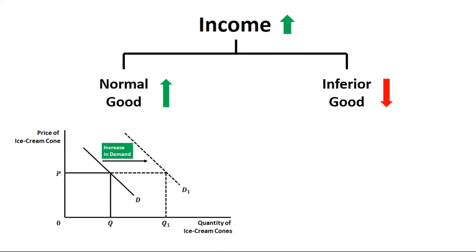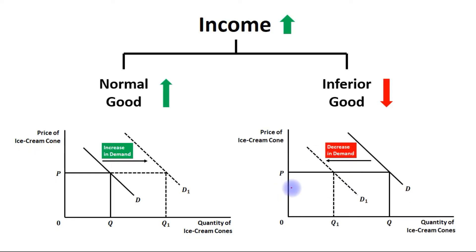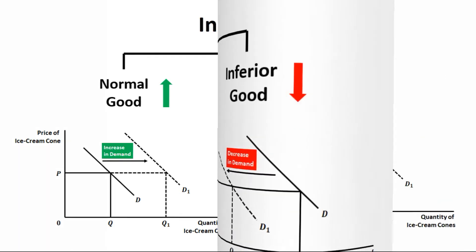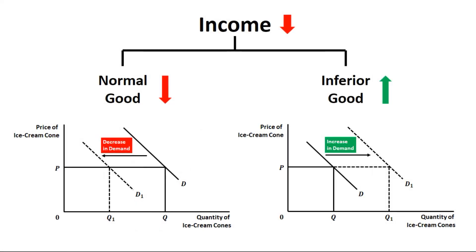Normal good is a case of increase in demand, so there will be a rightward shift in demand curve. For inferior good there will be a leftward shift in demand curve, that is a decrease in demand. This is the opposite scenario in which income is reduced, which leads to reduction in demand for normal good; however the demand for inferior good will be increased.